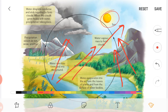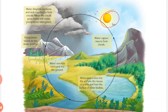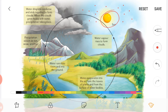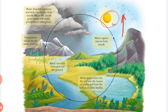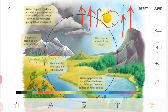This evaporation happens due to sunlight. The second process is condensation. So much evaporation occurs, and when all this water vapor rises to height, there is cool temperature up there, so the water vapor converts into water droplets.